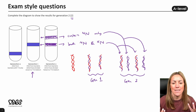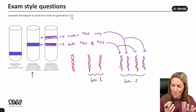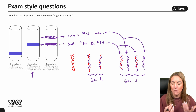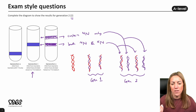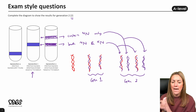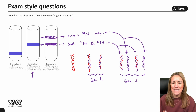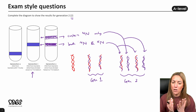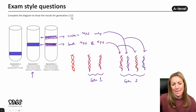The key takeaway: DNA replication is semi-conservative. This experiment provides the experimental evidence that supports it. Semi-conservative replication means the DNA produced will contain one original or parent strand and one new or newly synthesised strand. I hope you found this video useful — let me know in the comments if it's helped or if you've come across any application questions on this particular experiment.